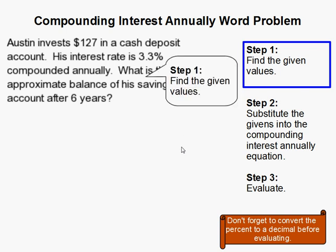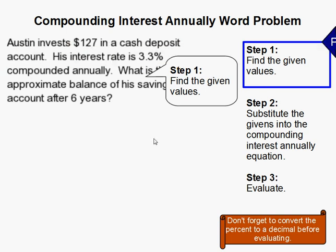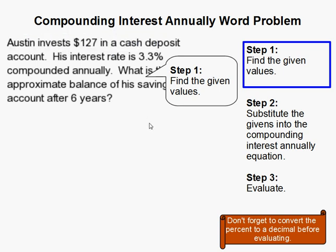We've been given the values. We have the interest rate as 3.3%, and I'll use R for that. We have $127 for the initial investment, oftentimes called the principal. And then years is 6.